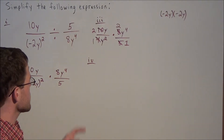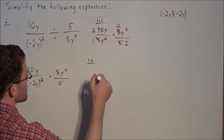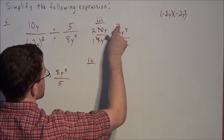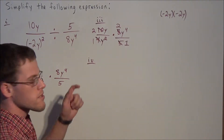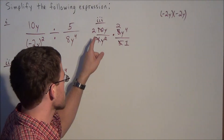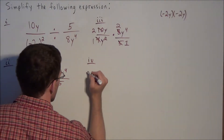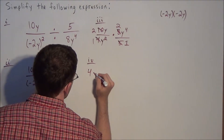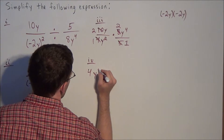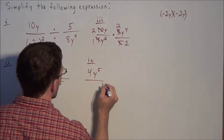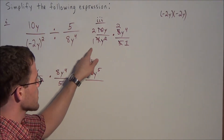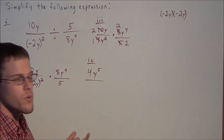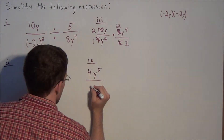For the next line we sort all of this together. We have 2 times y times 2 times y to the 4th — multiplying like terms gives 2 times 2 equals 4, and y times y to the 4th equals y to the 5th. In the denominator, all that's left is y squared times 1, which is y squared.